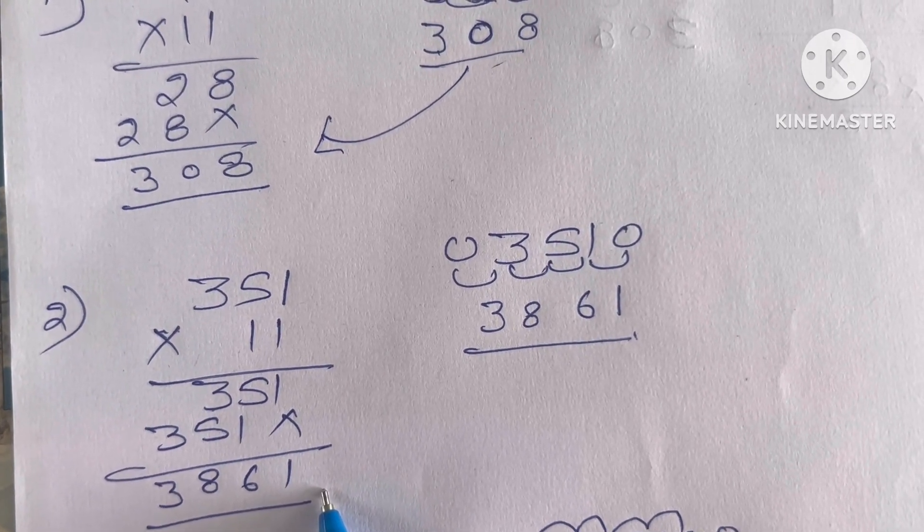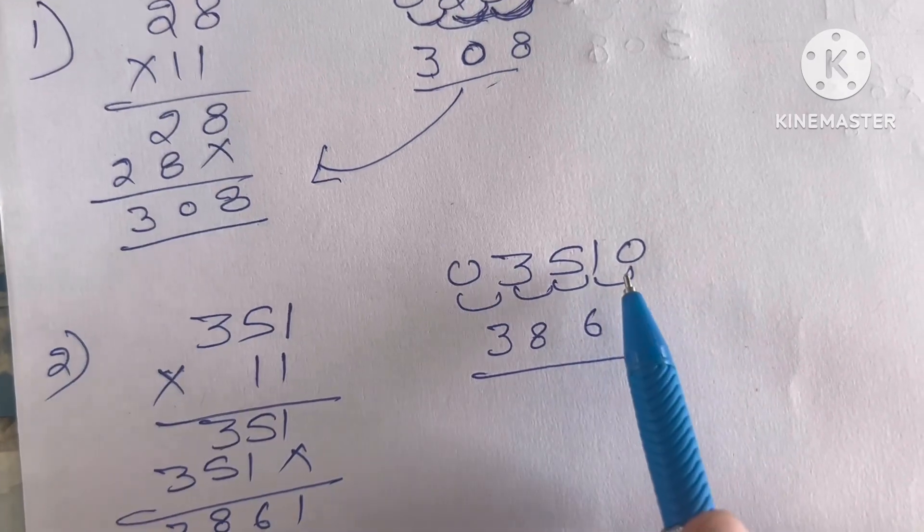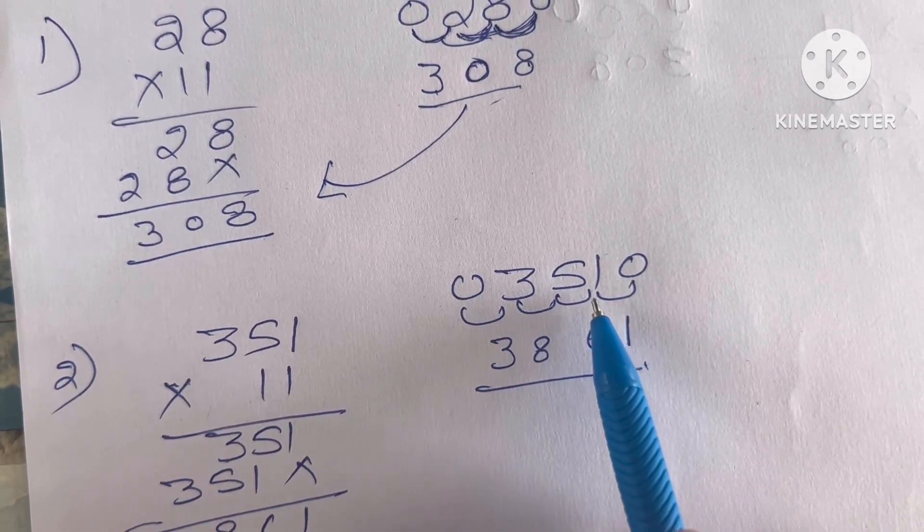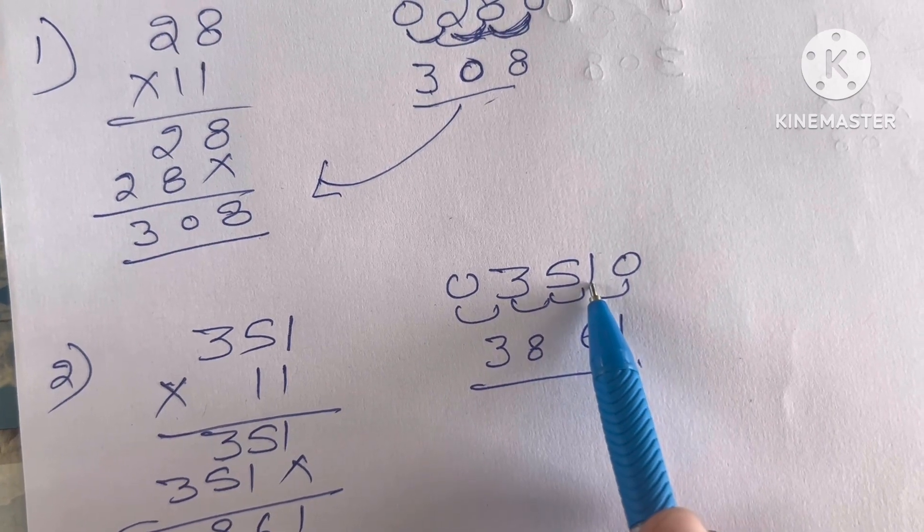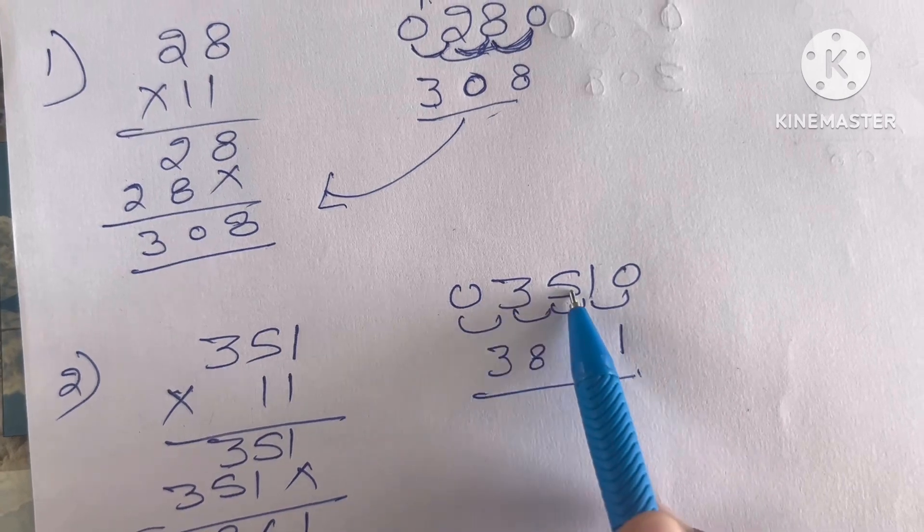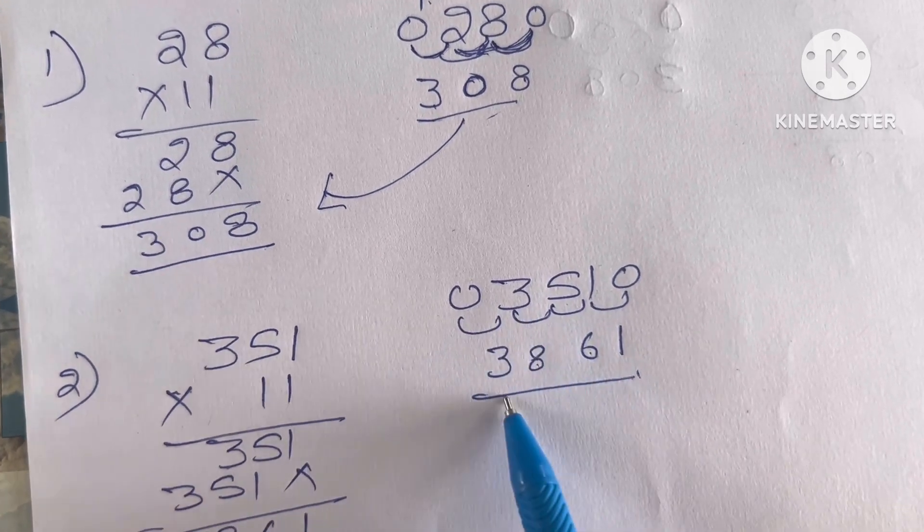Now, if you want to multiply, we are using a trick. Put 10 this side and 10 this side. Add two numbers. 1 plus 0, 1, 5 plus 1, 6, 3 plus 5, 8, 0 plus 3, 3.